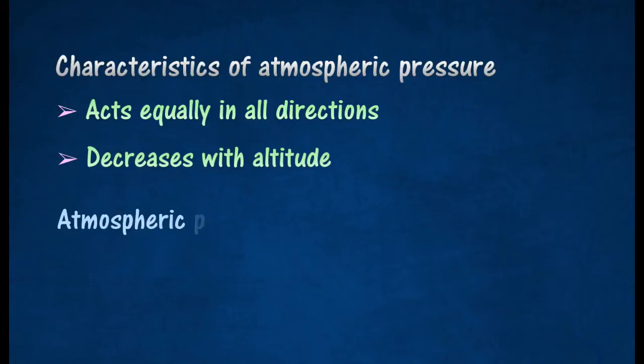Altitude is the height above sea level. At sea level, the atmospheric pressure is 760 millimeters mercury.